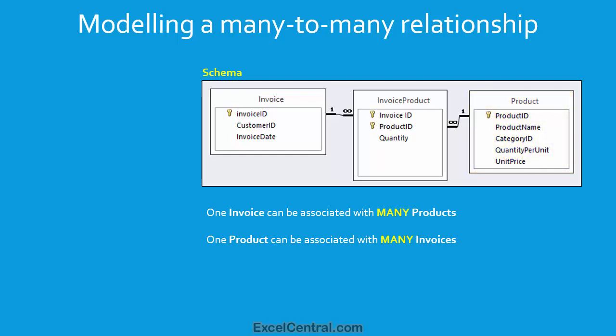Now let's consider the InvoiceProduct table — this is the link table that defines the many-to-many relationship. It also contains information about the relationship between a product and an invoice; in this case, the quantity sold. So if you considered an invoice with three lines to sell three different products, the InvoiceProduct table would have three rows with the invoice number matching the invoice, and each of those rows would define a quantity and a product that had been sold on that invoice.